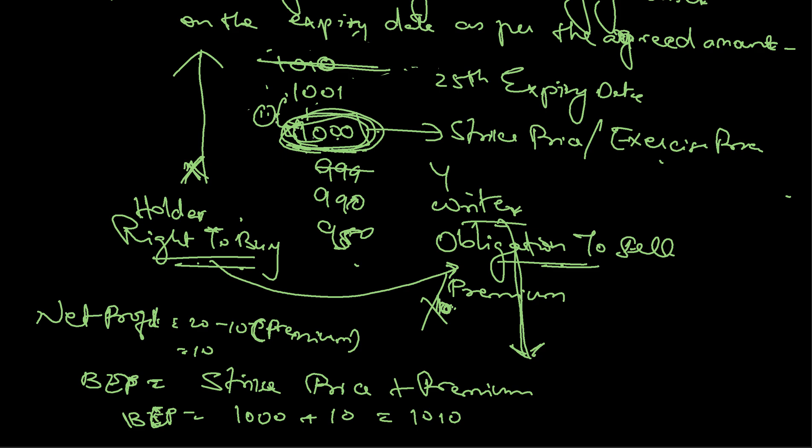If the spot price is below 1000, the holder will not execute the contract and will let his premium of 10 rupees go as his loss. That is the maximum loss in a call option for the holder.